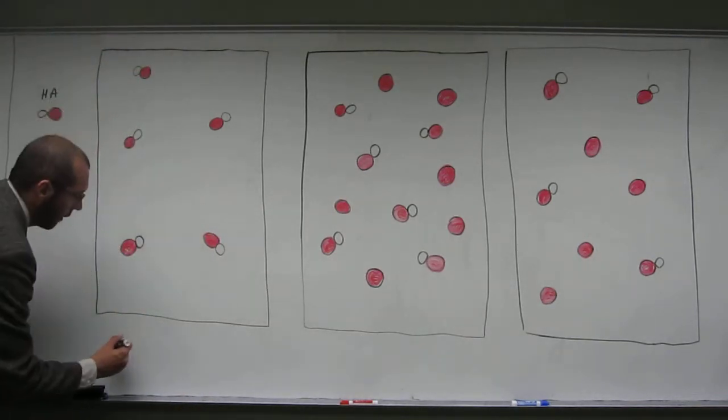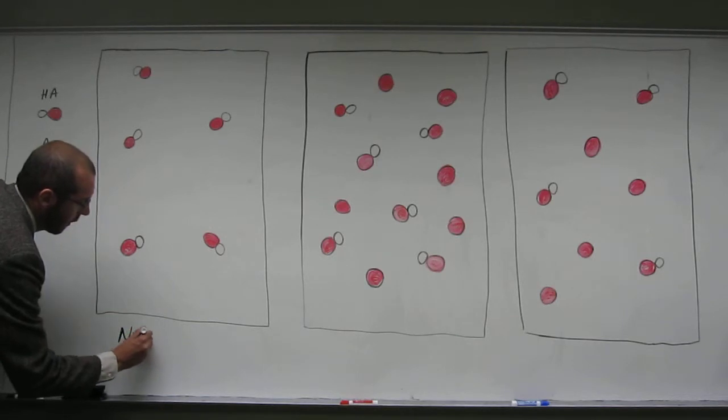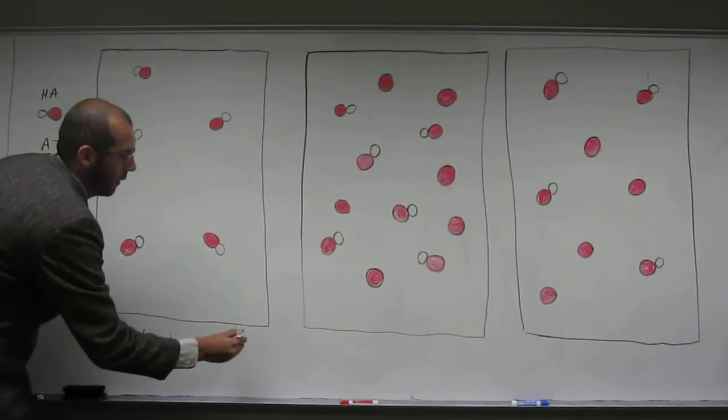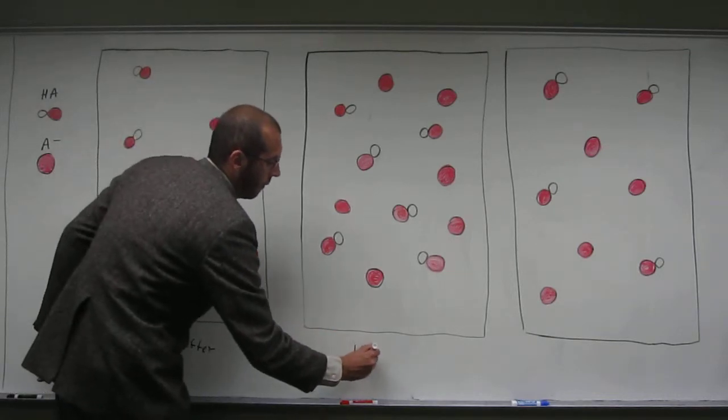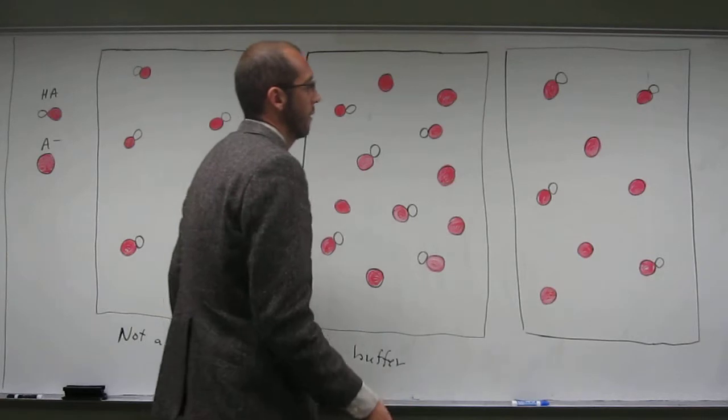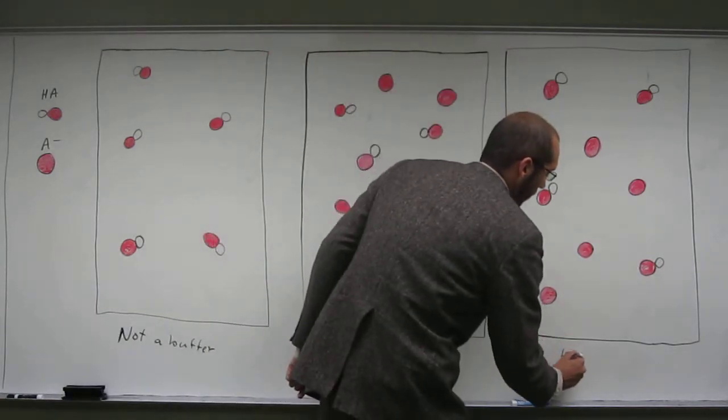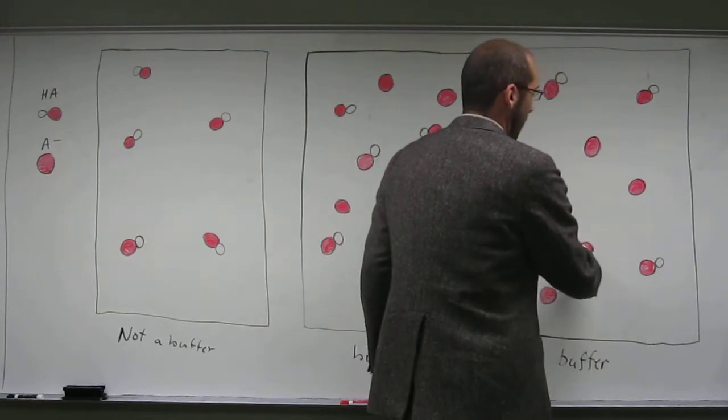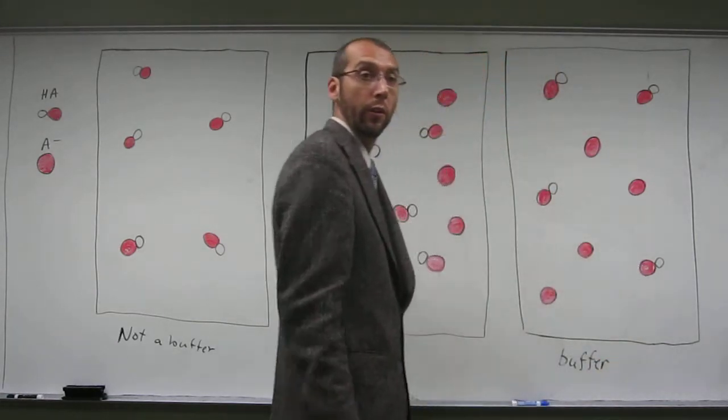So let's write that down. This is not a buffer. This is a buffer. And what about the other one? It's also a buffer. For the same reason. So we see A minus and HA, both present.